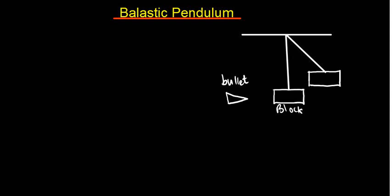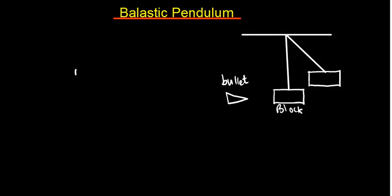Elastic collision is a type of collision whereby, after collision, the two balls or blocks collide and then they are going to move separately. Let's say if we have a block A and another block B.